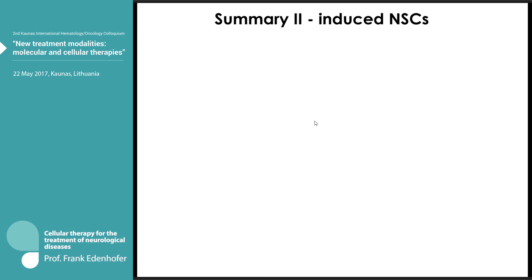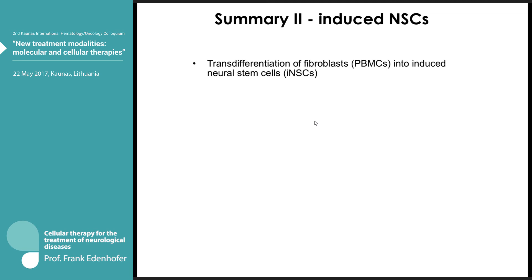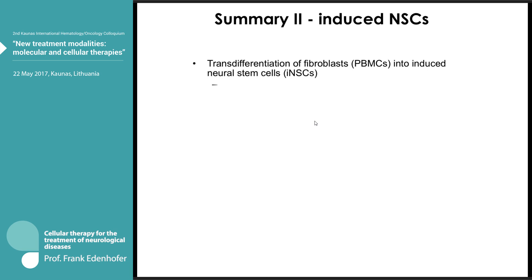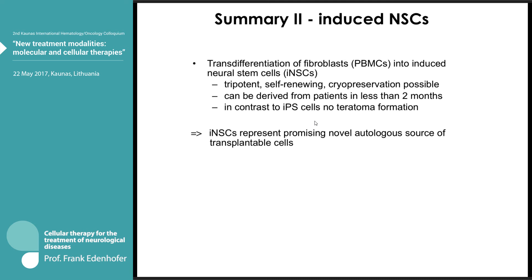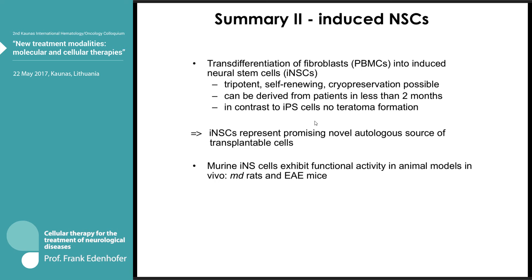In the first part I showed that directly converted INSCs can be produced from peripheral blood cells but also fibroblast cells. They are tri-potent and can self-renew, they can be cryopreserved, they can be derived from patients in less than two months, and in contrast to iPS cells they form no teratoma. By that, INSCs represent the most novel and promising autologous source of transplantable cells. I also showed a preclinical validation that we are currently adapting to human cells in order to bring this to preclinical realization in the future, and the same is true also for the application in Parkinson's disease, where cell replacement is a very promising and attractive tool.